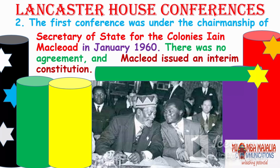The first conference was under the chairmanship of Secretary of State for Colonies Ian Macleod in January 1960. There were no agreements and Macleod issued an interim constitution — we were still under British colonial rule, but that's when the process started. The two in the picture are Mboya and Kenyatta — they were great friends and architects of independence, though later there was some enmity: Mboya was assassinated in 1969, and there were allegations of state involvement.